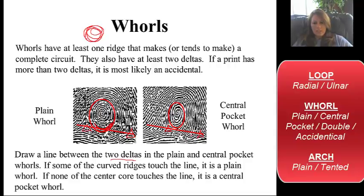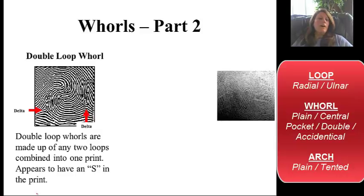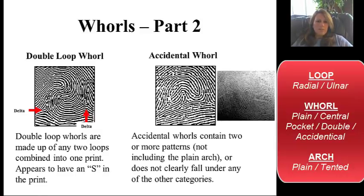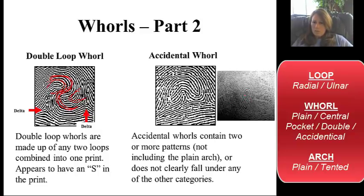The double loop whorl is very easy to spot — it always makes an S shape, and it doesn't necessarily have to be in the right direction. Anytime it makes that S pattern, that's a double loop. Then the accidental whorl — this one doesn't really fit into any other category. It kind of has a whorl shape with deltas, but the center is not a circular pattern. So it doesn't fit into any of the others, and they put it as an accidental whorl — a combination of different things.